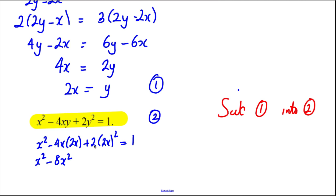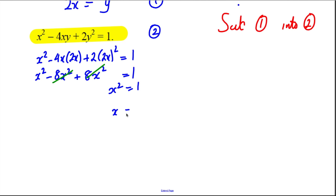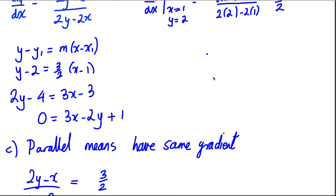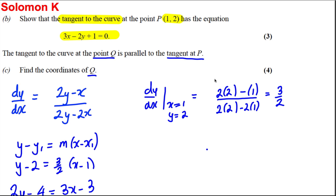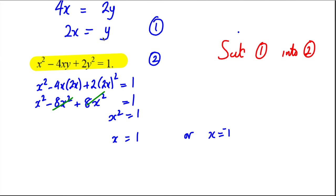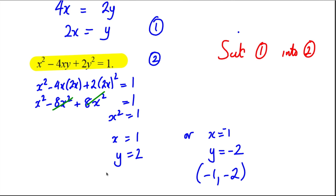Those terms cancel and we have x² = 1, so x = 1 or x = negative 1. When x = 1 we already know y = 2, which was point P. If x = negative 1, then y = 2(negative 1) = negative 2. So the coordinates we're looking for — the new point Q — are (negative 1, negative 2).